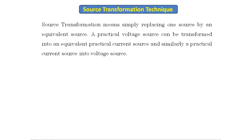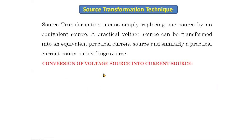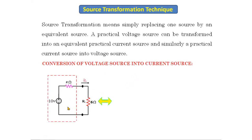Source transformation is used to simplify a circuit by converting one source to another. Now let's see how to convert a voltage source into a current source. This circuit consists of a voltage source and a resistor — this dotted part is looking like a practical voltage source.